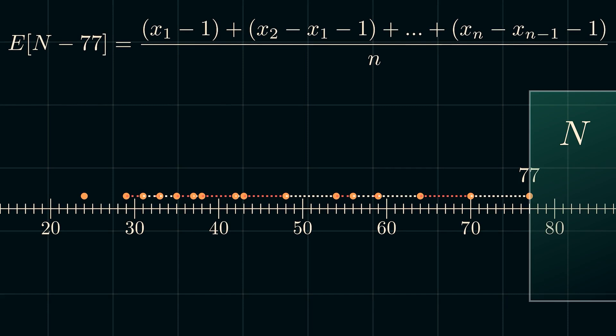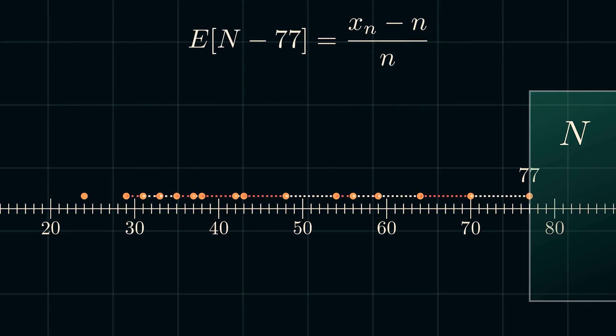We can simplify further by noticing that each x cancels out except for xn, and then we are left with xn subtract by 1 n times. So this leaves us with xn minus n divided by n, which finally simplifies to xn divided by n minus 1.